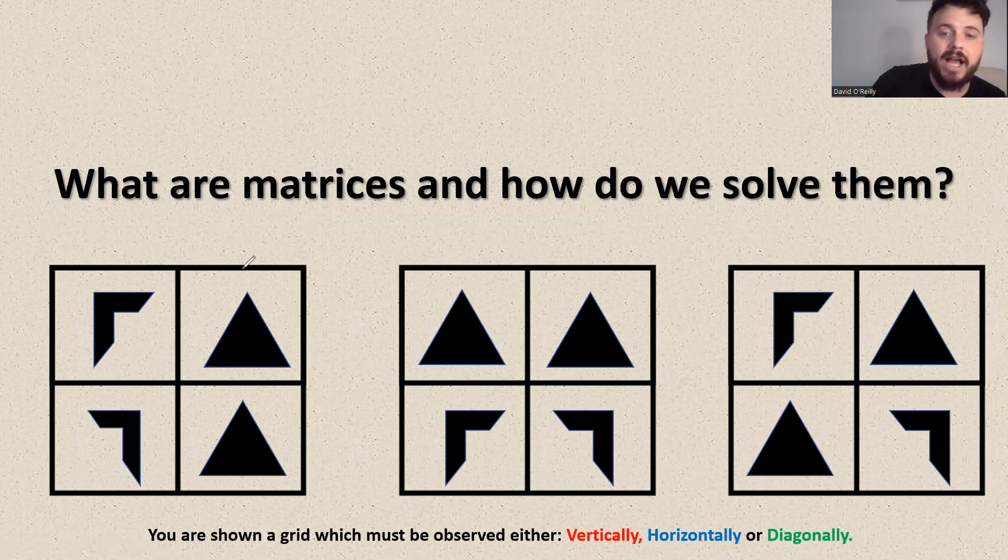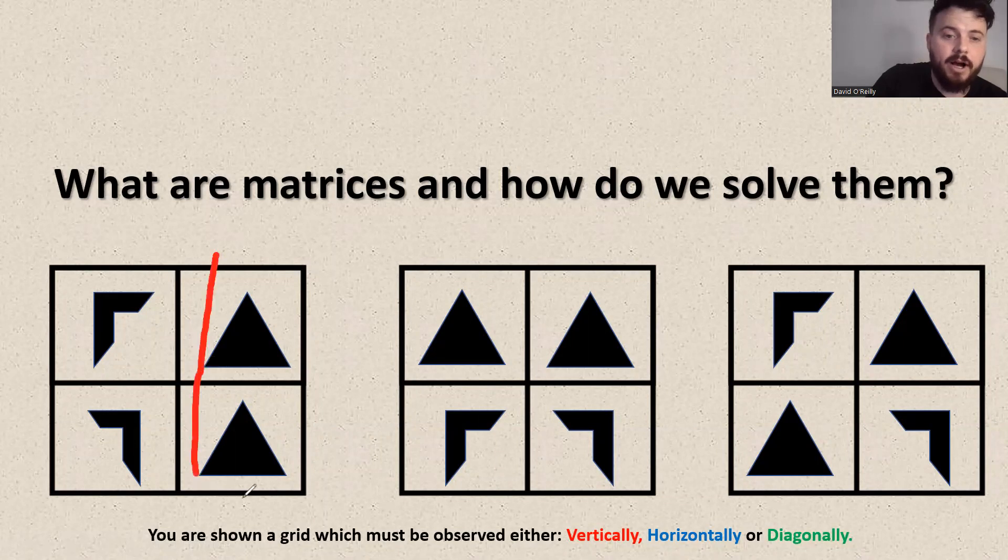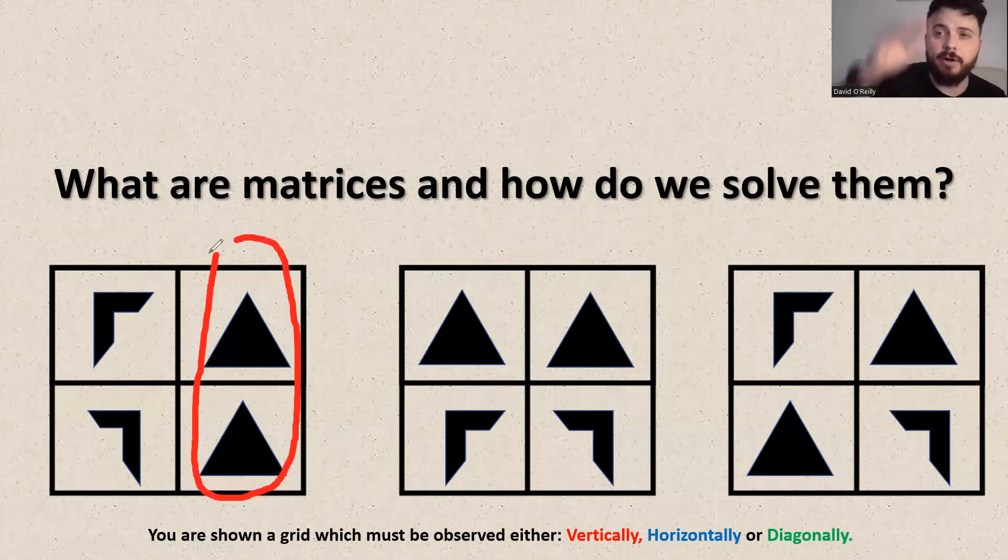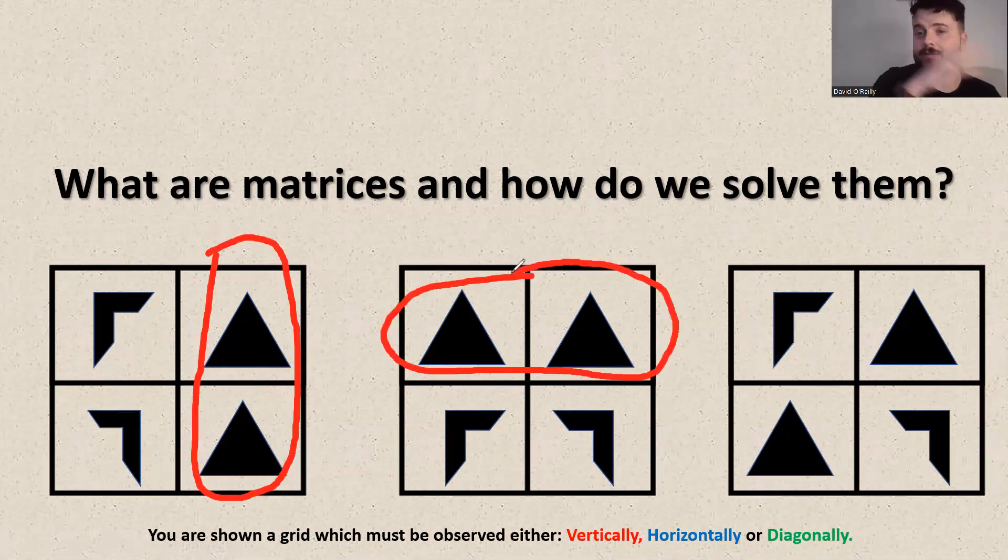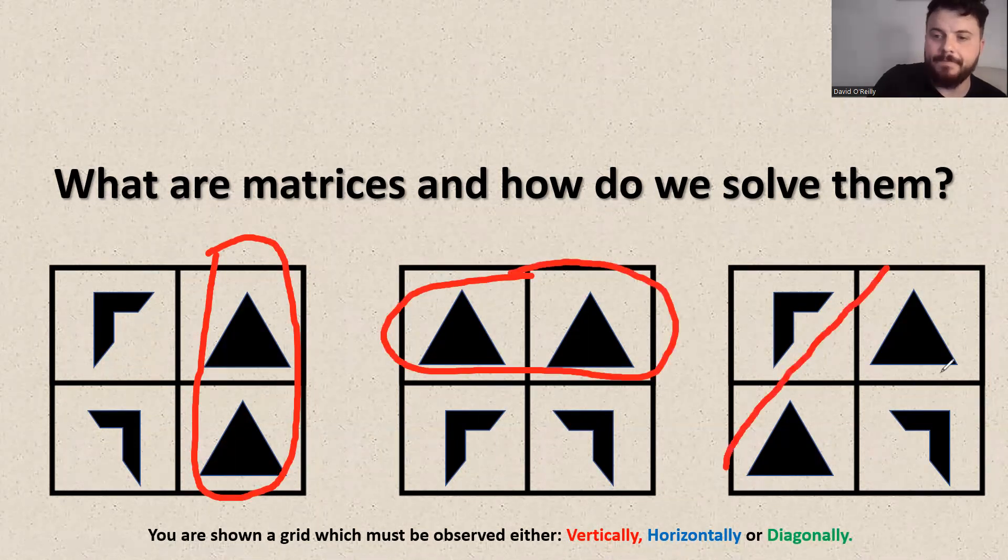So for example, if we look at the triangles in each grid, we can see in the first grid, the triangles are vertical. They're going from top to bottom. In the second grid, they are going horizontally from left to right. And in the third grid, they are going diagonally.